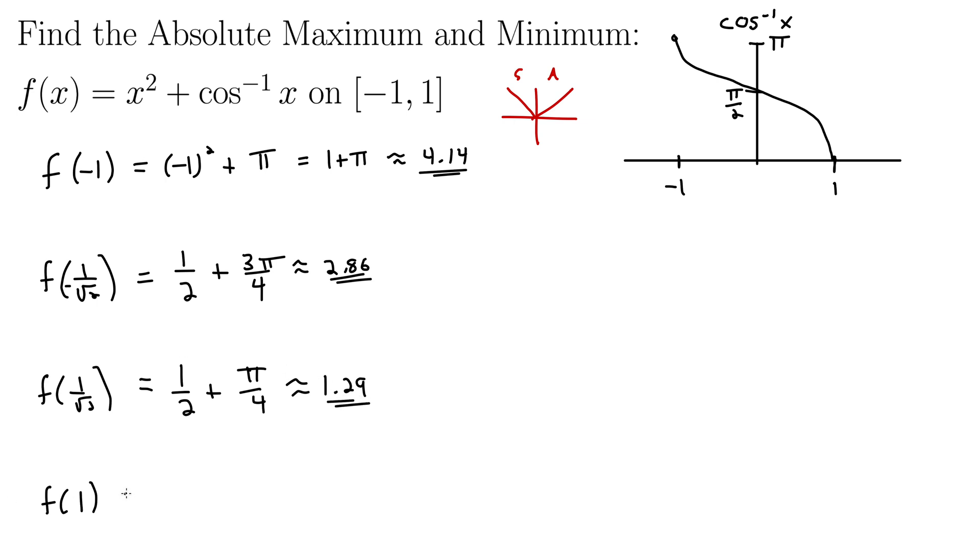And finally, we evaluate at the right endpoint. So f of one is one squared, which is one plus arc cosine of one, which is zero. Well, that gives us one. So next, we compare all these values. We have 4.14, 2.86, 1.29, and one. So it looks like we have a max of 4.14 and a minimum of one.